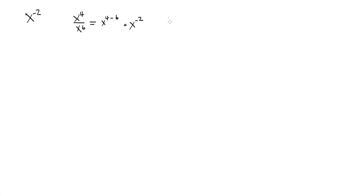But I also taught you a different way to deal with this. When we have the quotient rule, we take the smaller number, subtract it from the bigger number, and put the answer where the bigger number was. So 6 minus 4 is 2, and we put that on the bottom because that's where the larger exponent was — that's x squared on the bottom. And when you eliminate everything from the numerator, what's left is a 1. So we have 1 over x squared.